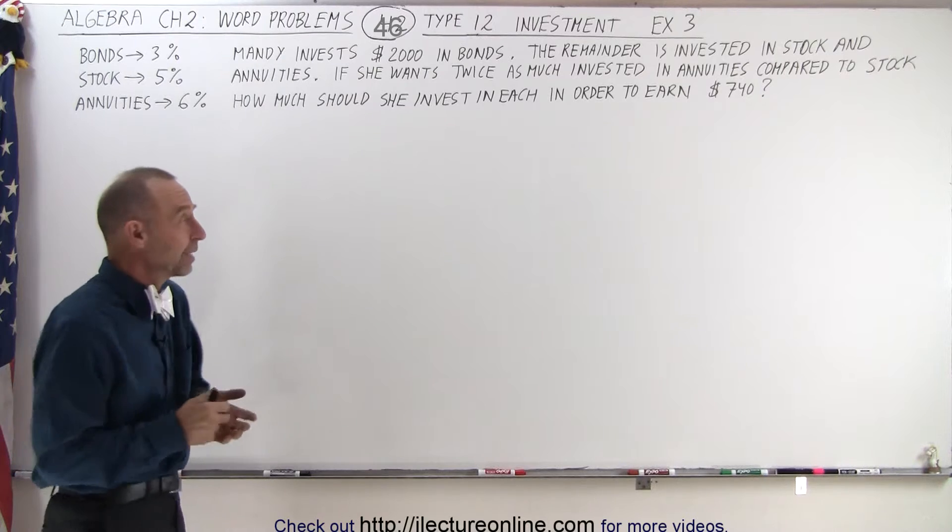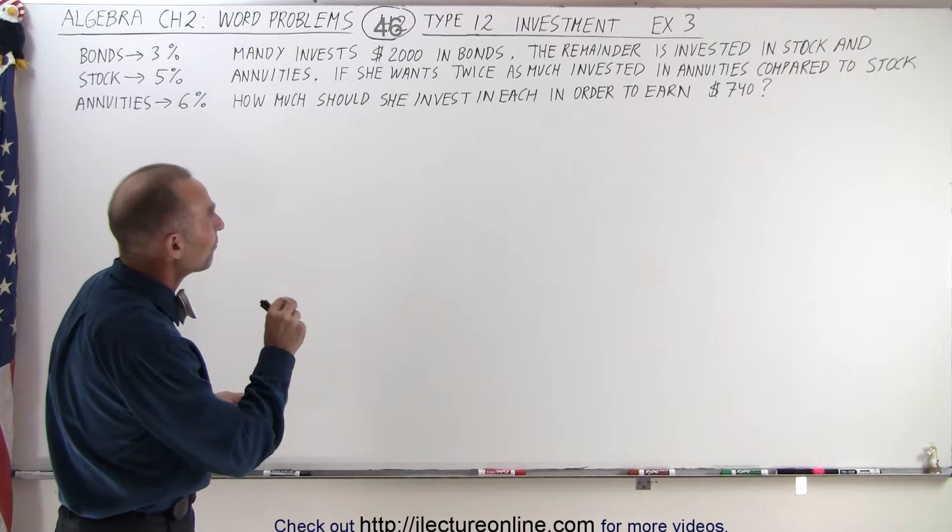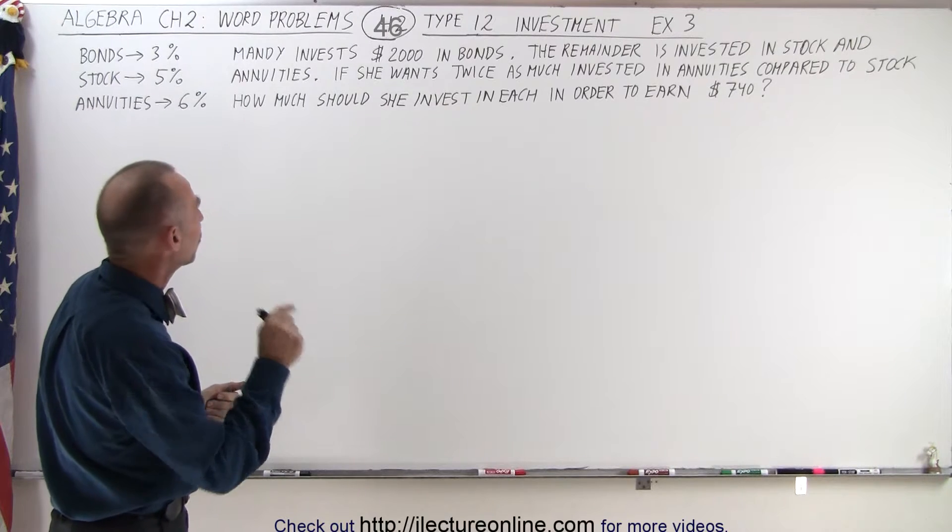We don't know how much of that remainder is, but she does have stipulations. She wants twice as much invested in annuities compared to stock.